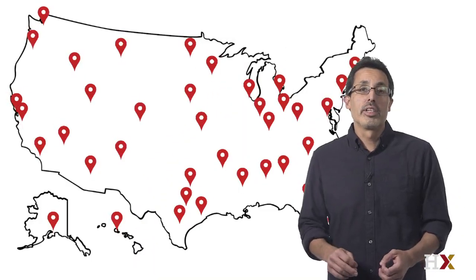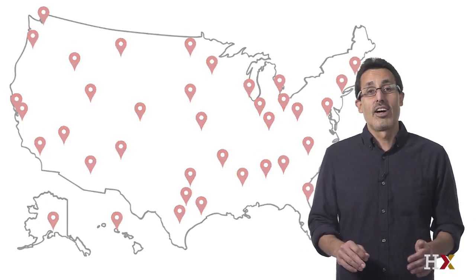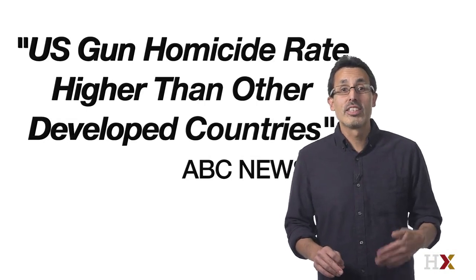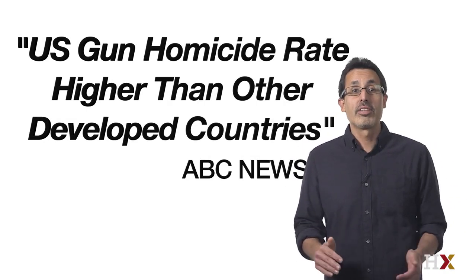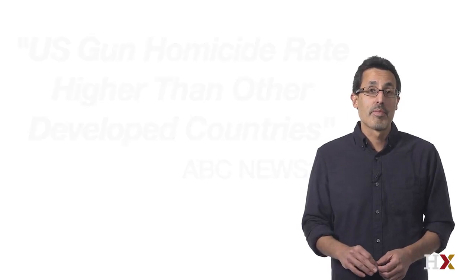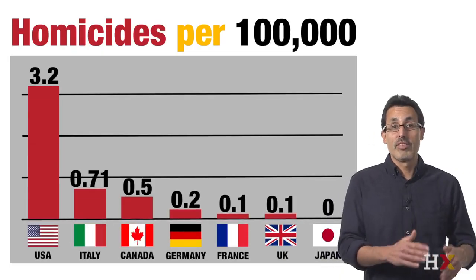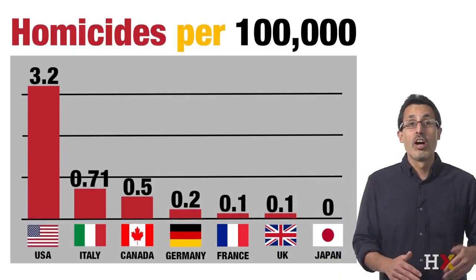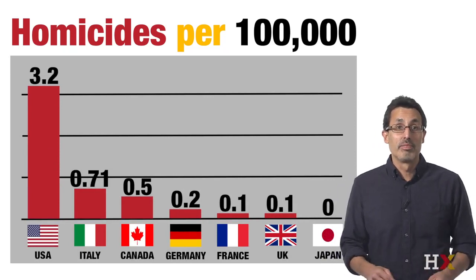Imagine you live in Europe and you're offered a job in a US company with many locations across all states. It is a great job. But news with headlines such as 'US gun homicide rate higher than other developed countries' have you worried. Charts like this one, where we can see the US having a much higher homicide rate than other rich countries, worries you.